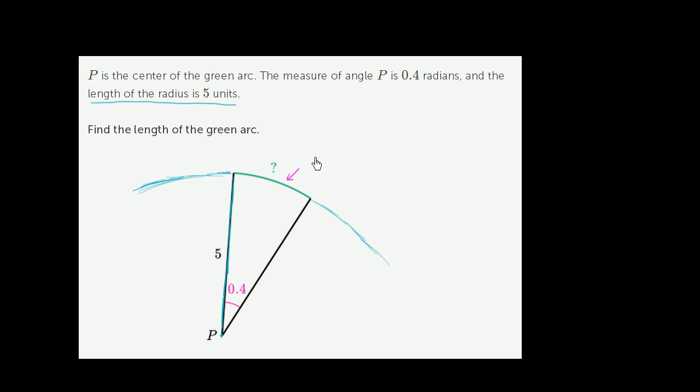So this length, we could write as 0.4 radii—radii, or radiuses, but radii is the proper term. Now, we don't want our length in terms of radii. We want our length in terms of whatever units the radius is, these five units. Well, we know that each radius has a length of five. So this is going to be 0.4 radii times five units per radius.